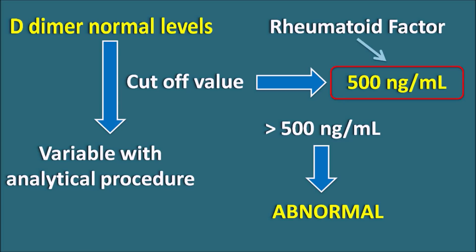The D-dimer test is one of the useful tests that can rule out the formation of thrombus or embolism. These are serious pathological conditions where arrest of blood flow at the capillaries may lead to coma and death. It is always better to assess thrombus and embolus formation at the early stage, and for this the D-dimer test is highly useful. Thank you for watching this video.